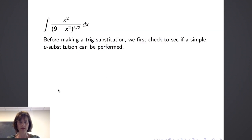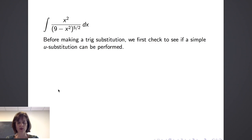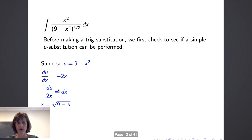Let's work through the first example: the integral of x squared over 9 minus x squared to the 5 halves power dx. Before making a trig substitution, we want to first check if a simpler u substitution can be performed. If we let u equal 9 minus x squared, then du over dx equals negative 2x, so dx equals negative du over 2x.